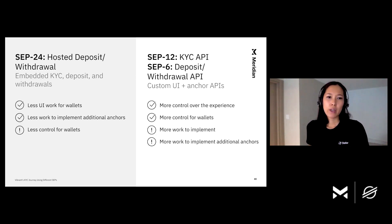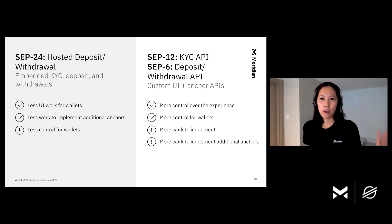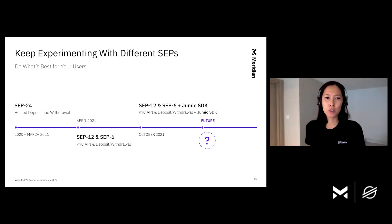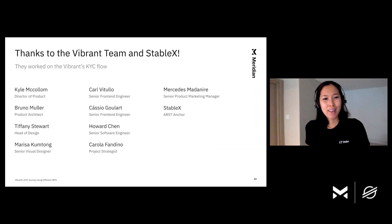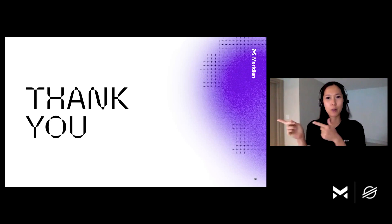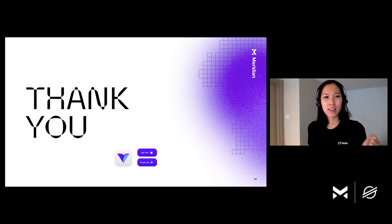This is a summary of the advantages and disadvantages of SEP24 and SEP12/SEP6 for Vibrant's use case. Ideally, we can have both types of anchor integration, and StableX does support both. Vibrant's KYC process may change in the future since SEPs are always evolving, so we will keep experimenting for our users. Thanks to the Vibrant team and StableX for working hard on improving Vibrant's KYC flow. Vibrant is available on both the App Store and Google Play.